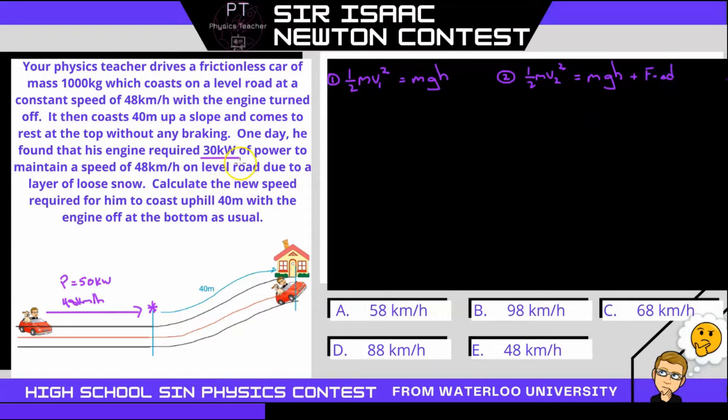Now the power being 30 kilowatts is required to maintain this velocity of 48 kilometers per hour. We know that power is work over time, our equation for power. I usually tell my students that my friend Power is always upset at their boss because they're always made to work over time. We know that work is force times displacement, and displacement over time is velocity, so that just equals force times velocity. That's going to be v1 because that's the power required to maintain that original v1 velocity of 48 kilometers per hour.